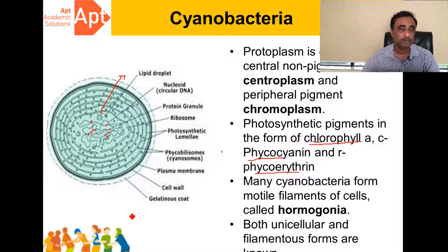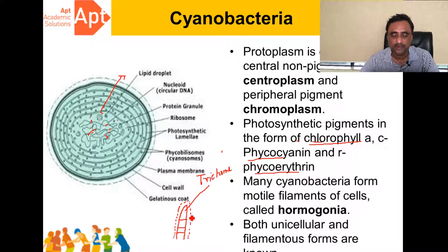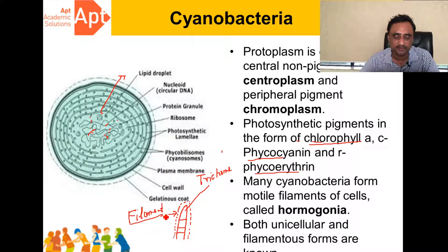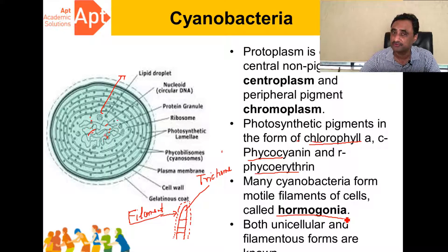In filamentous forms, the filament is covered with a mucilaginous sheath. The individual filament is called a trichome. The trichome together with the mucilaginous sheath constitutes the filament. Fragments of the filament are called hormogonia. So three terms to keep in mind: hormogonia, trichome, and filament.